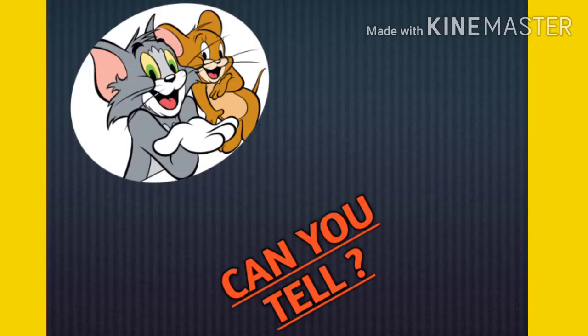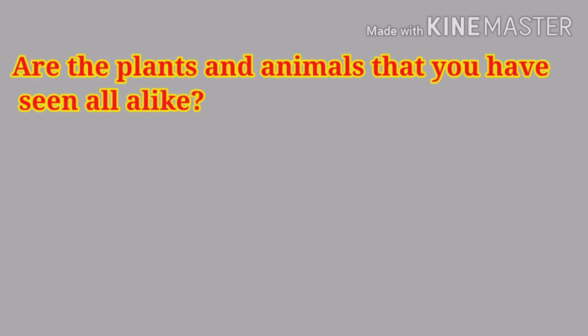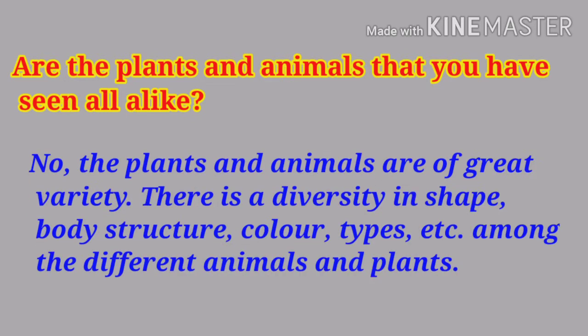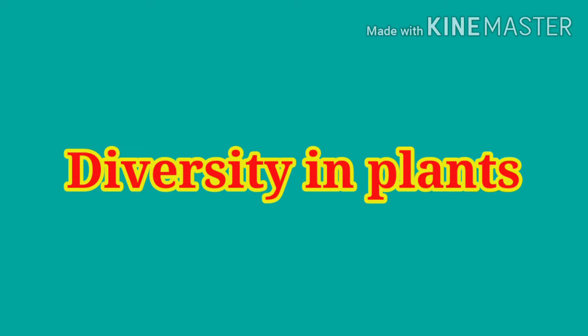Are the plants and animals that you have seen all alike? No, plants and animals are of great variety. There is diversity in shape, body structure, color, types, etc. among the different animals and plants. Various types of plants are found in many places around us.